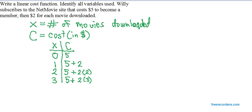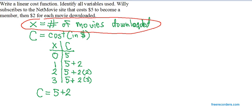So, in general, notice that C in our second column is always equal to the membership price plus two times the number of movies downloaded. But remember, we're calling the number of movies downloaded X, and so the linear cost function here is C equals five plus two X.